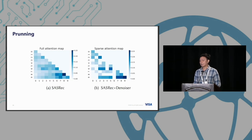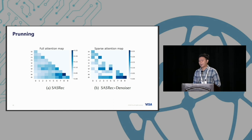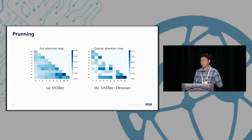This shows our attention maps. We compare attention maps at inference time by randomly plotting 10 items to see where the item-item dependencies are in our denoising mask. Because we use a mask, we can prune some of the noisy attentions. At Visa, we also have a visualization team to visualize the flow patterns across different transaction sequences.